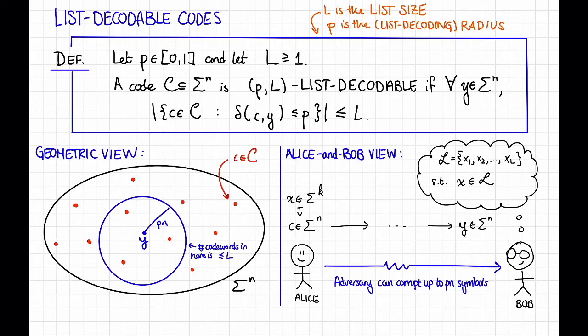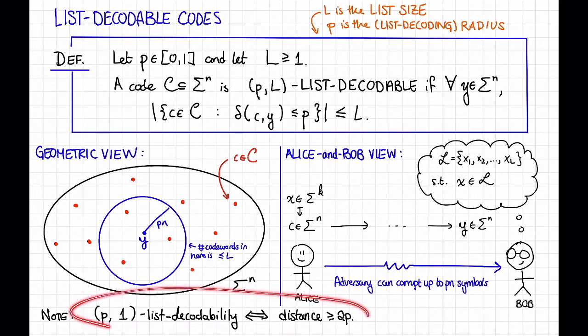List decoding generalizes the decoding situation that we've seen before, which I'm going to call unique decoding, in the sense that the setting we were looking at before was list decoding for capital L is equal to 1. That is, P comma 1 list decodability is equivalent to saying that the code has distance at least 2P. We've already studied this question, how to get good distance, a whole bunch, and so you can see list decoding as a generalization of that when L becomes larger than 1.